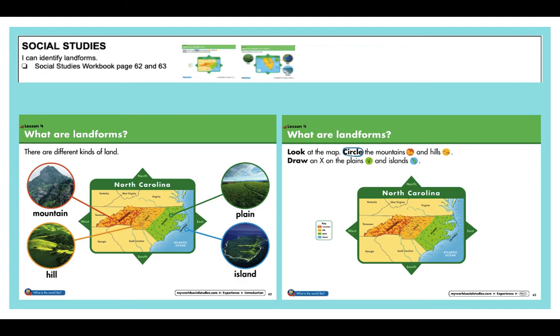We're talking about different kinds of land forms. Those are things you can find on the earth, like mountains, hills, plains, and islands. Those are all different kinds of land forms you can find on the map. On page 62, it's showing you a map of North Carolina, it's showing you where the mountains, hills, plains, and islands are. On page 63, it's your turn to find those things.